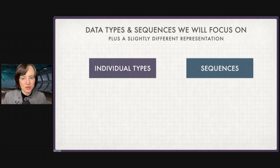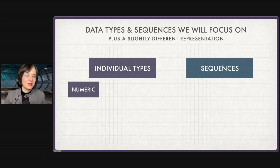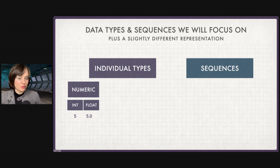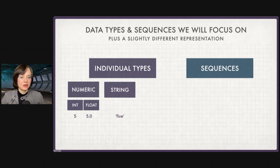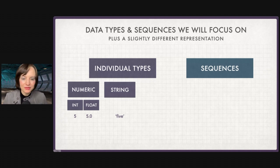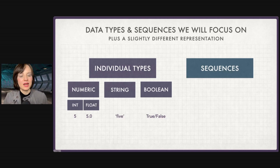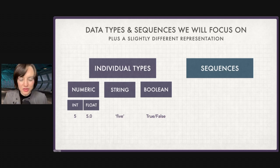In this course, we're going to be focused on numeric types such as integers — the number five — and floats, which is a decimal like 5.0. We're going to be talking about strings, technically a sequence, but strings are words effectively — they're denoted by quotation marks. So the word five, F-I-V-E, is a string. And bools — that's whether something takes on a true or a false value.